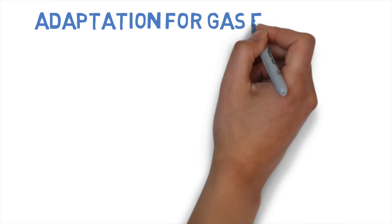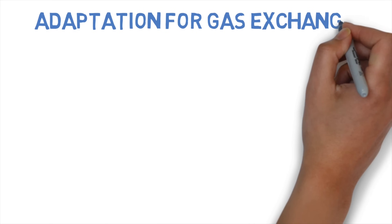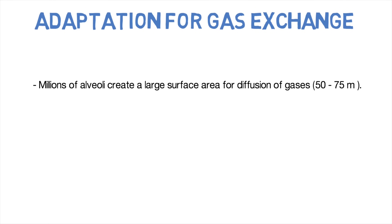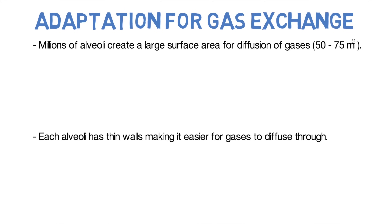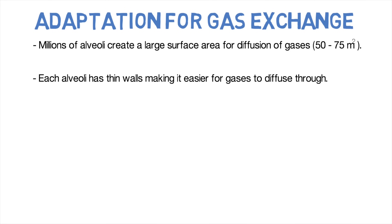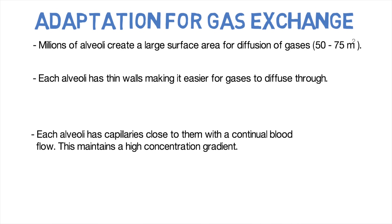For the exam, you need to know the adaptations for gas exchange. First, there are millions of alveoli, creating a large surface area for diffusion of gases — between 50 to 75 metres squared. Second, each alveolus has thin walls, making it easier for gases to diffuse through.